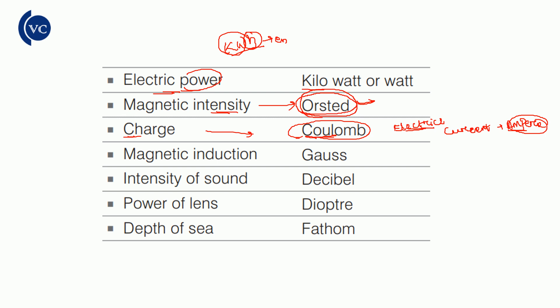Magnetic induction — the unit is Gauss. Sound intensity — the unit is decibels. Lens power — the unit is diopter, also expressed as second inverse.